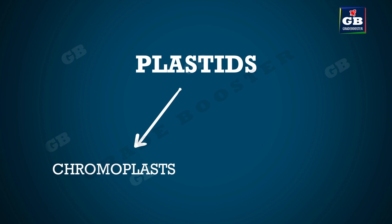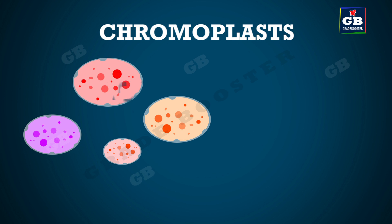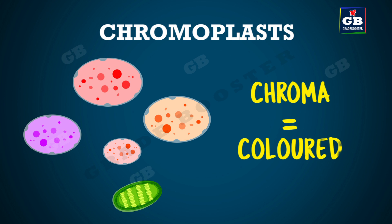One: chromoplasts. Two: leukoplasts. First, we see about chromoplasts. Chroma means colored. The plastids that have color pigments in their stroma look colored and are called as chromoplasts.